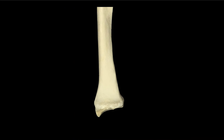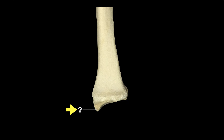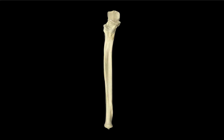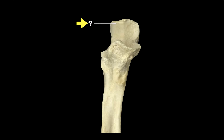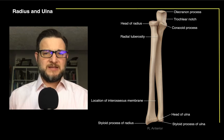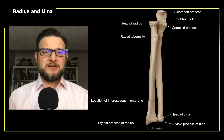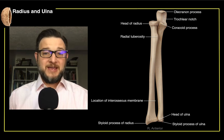What about this one? That's a pointy process on the radius — that's the styloid process of the radius. And what about this thing here? That's the larger superior portion of the trochlear notch — it's a process — that's the olecranon process. And that, my friends, is the radius and ulna in a nutshell.